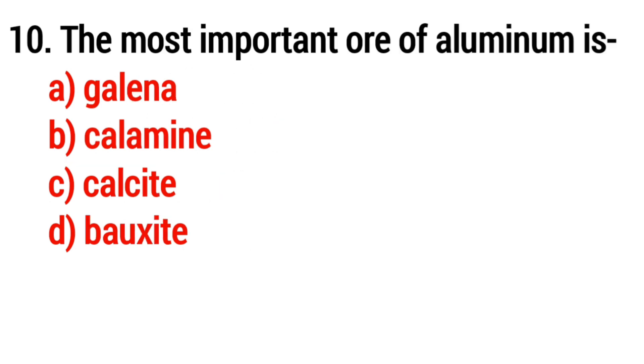Question 10: The most important ore of aluminum is... Answer: Option D, bauxite.